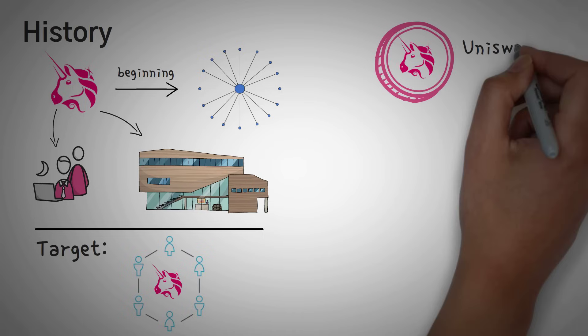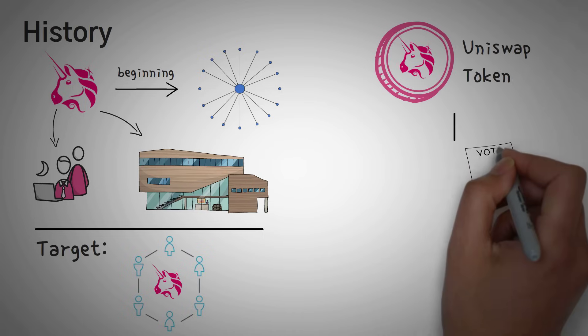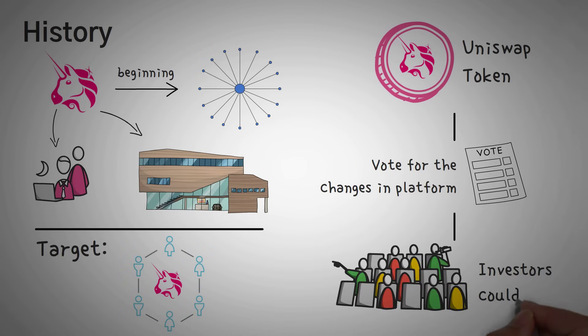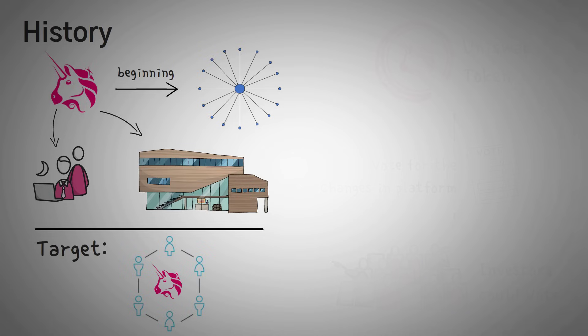To do this, they created a Uniswap token that was specifically used to vote on certain changes to the platform. This way, the token holders, which are actually the investors, could vote on protocol changes instead of having one person make all the decisions. But why would they sell their tokens? What if nobody wanted their token?